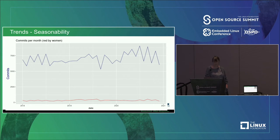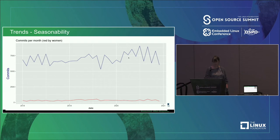One hypothesis — not yet tested — is that perhaps when COVID hit, more people felt they had free time to contribute to the kernel. That might explain why we suddenly see a jump in terms of commits and contributors during those months.